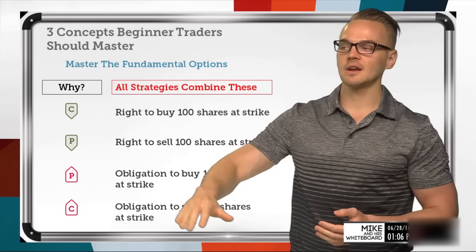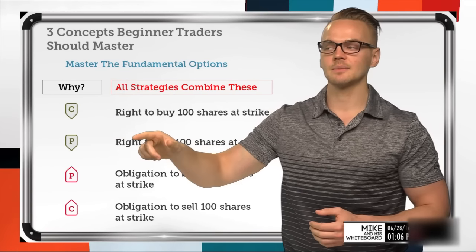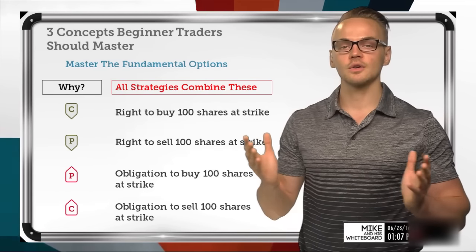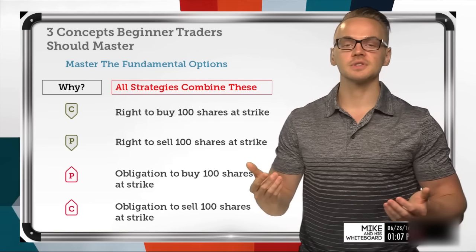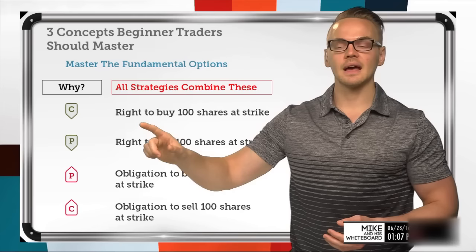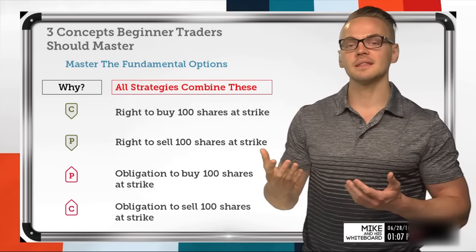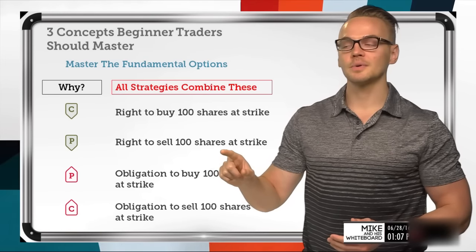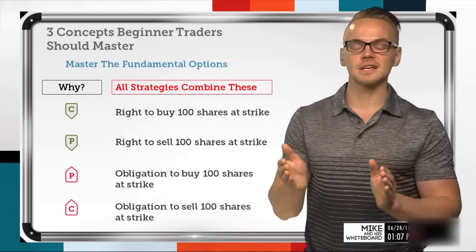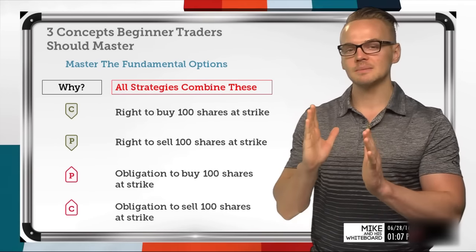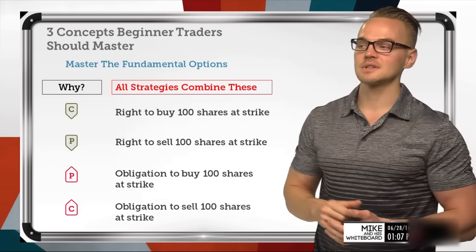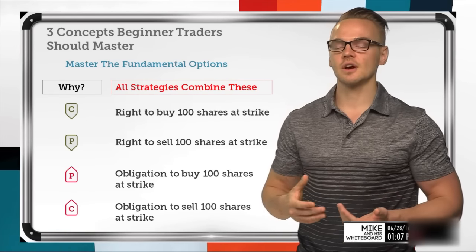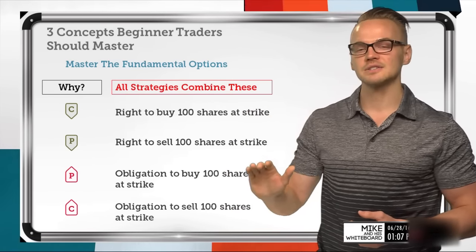Once you understand and master the fundamentals — where you know exactly what is implied when you look at a long call, long put, short call, or short put — it becomes interesting when you start adding them together into spreads. For example, a vertical spread is just taking a short put and combining it with a long put. Because a short put is the obligation to buy 100 shares and a long put is the right to sell 100 shares, if I have both at different strikes my risk is defined at the difference between the strikes.